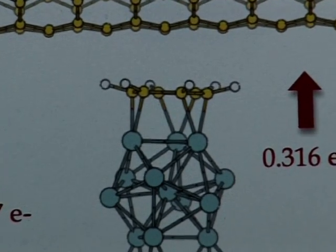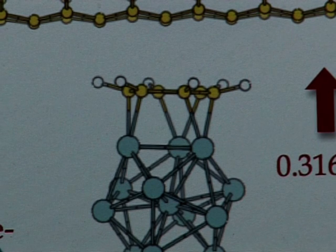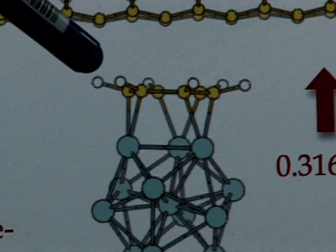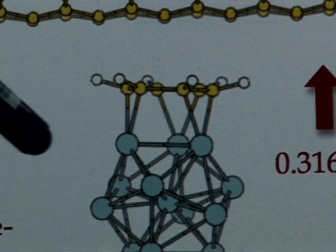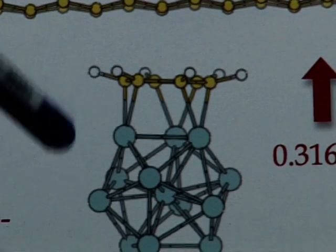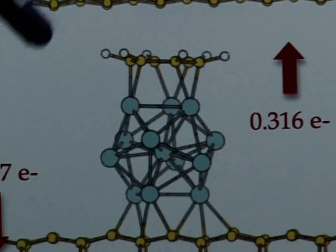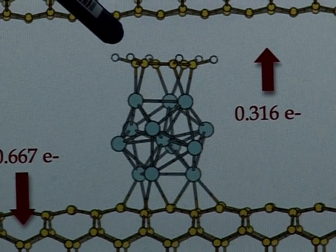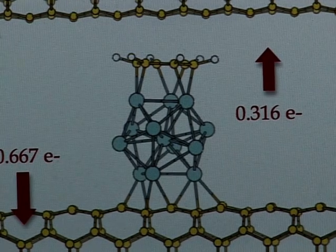Indeed, the bond between the carbon atoms of the tube and the carbon atoms of the benzene with the cluster is pretty strong. Hence, this system will be a stable one and it will be possible to detect the molecule.